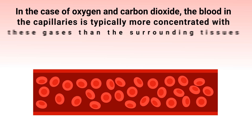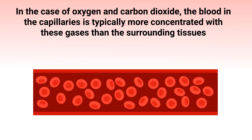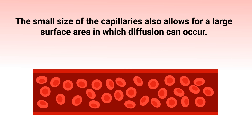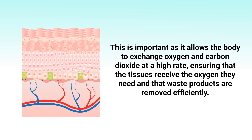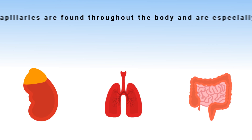In the case of oxygen and carbon dioxide, the blood in the capillaries is typically more concentrated with these gases than the surrounding tissues. The small size of capillaries allows for a large surface area in which diffusion can occur, enabling the body to exchange oxygen and carbon dioxide at a high rate, ensuring tissues receive the oxygen they need and waste products are removed efficiently.